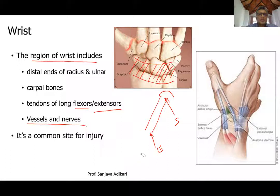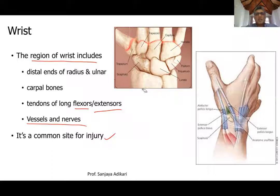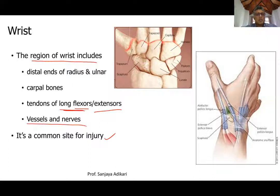This region is a common site for injury, so clinically it is important. Since several nerves and blood vessels pass through that area, when there is injury, some of these structures can get damaged. You can have fractures in this area, and cut injuries — especially to the anterior aspect — can damage nerves, vessels, and even the long tendons.